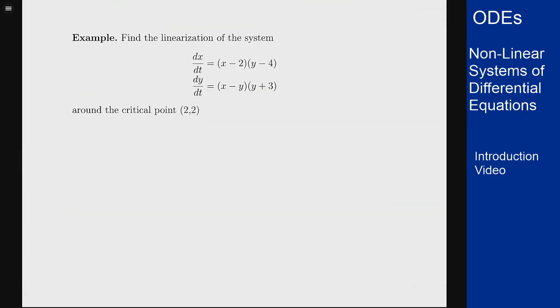To find the linearization of this system around the point (2,2)—we can see from these two terms that this will be the equilibrium solution. If I plug in 2 here I get 0, and if I plug in 2 and 2 here I also get 0. To find the linearization, I need to find the four derivatives: fₓ, f_y, gₓ, and g_y, where this here is f and this here is g.